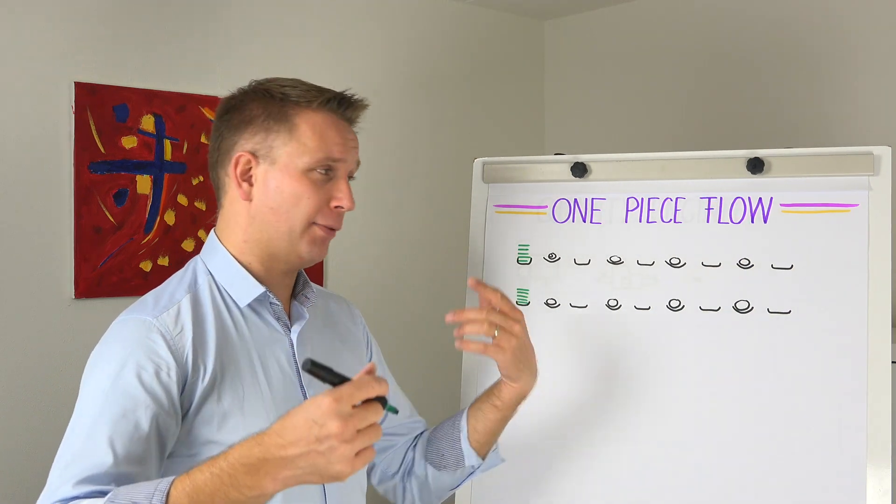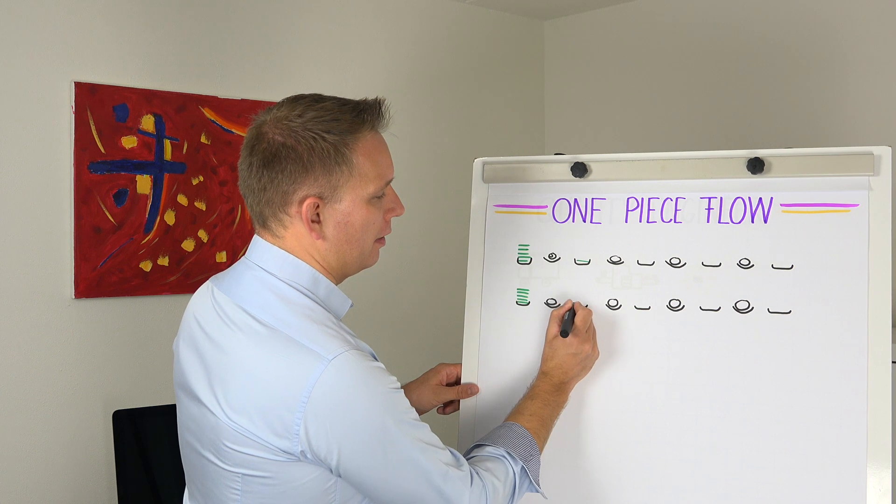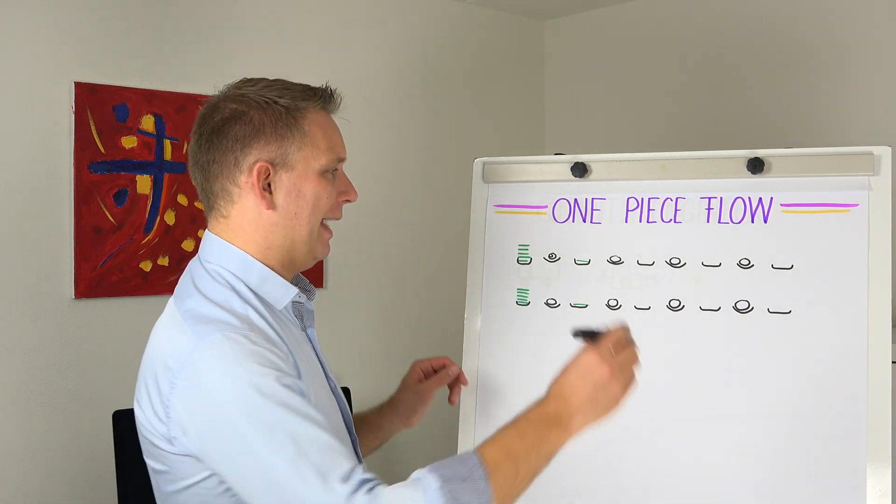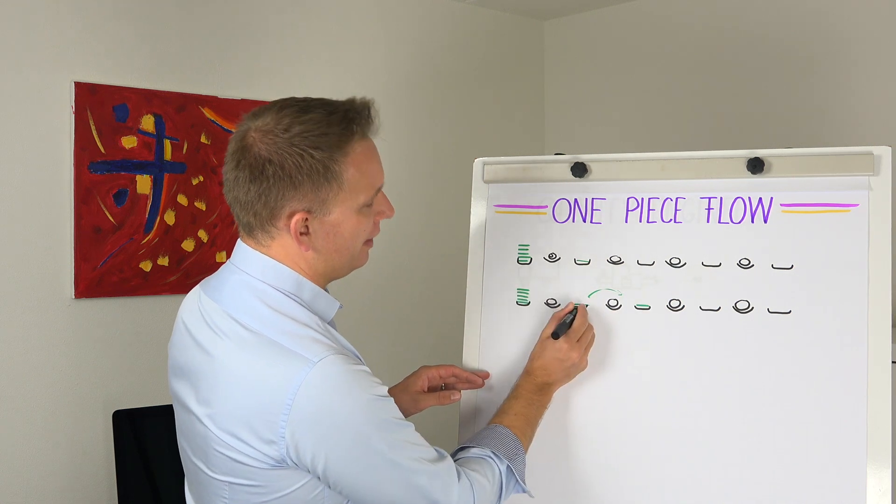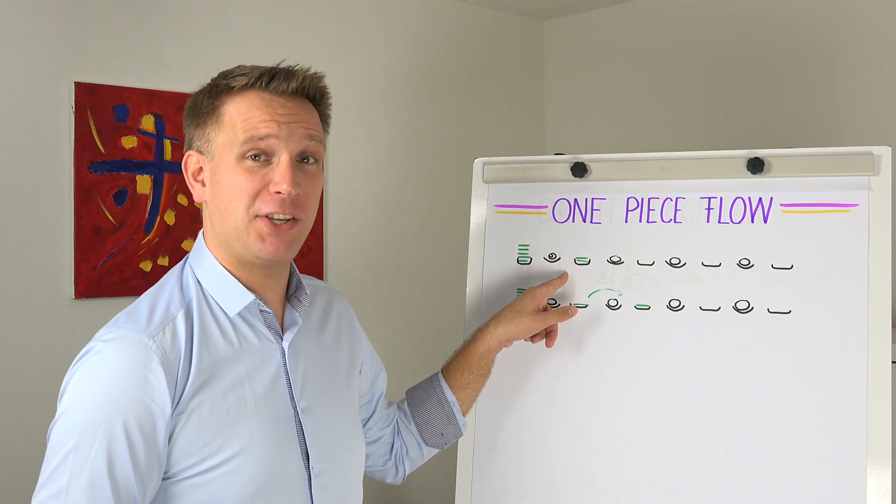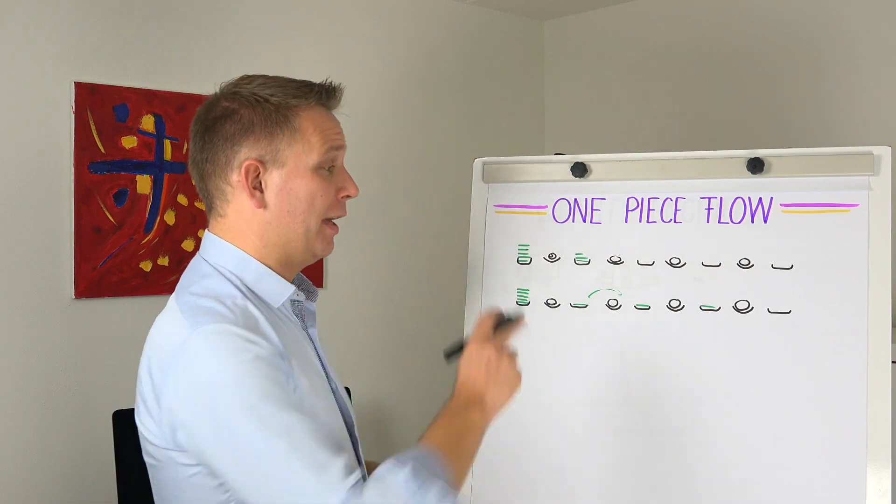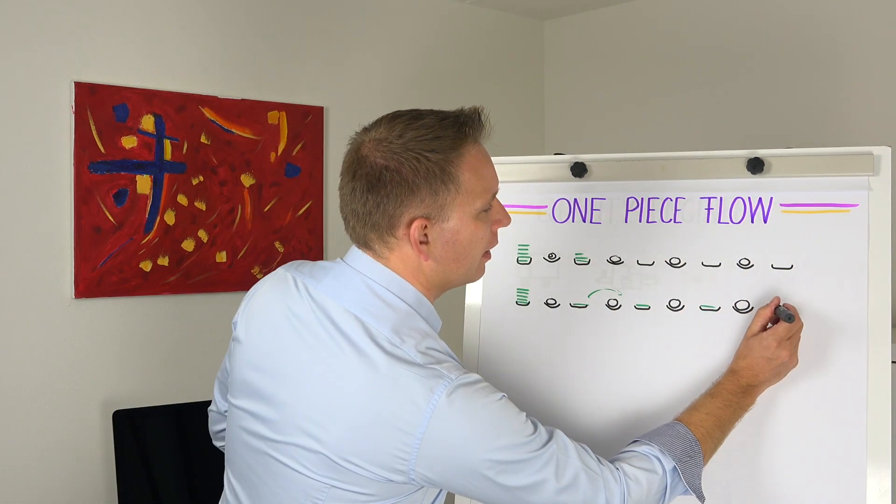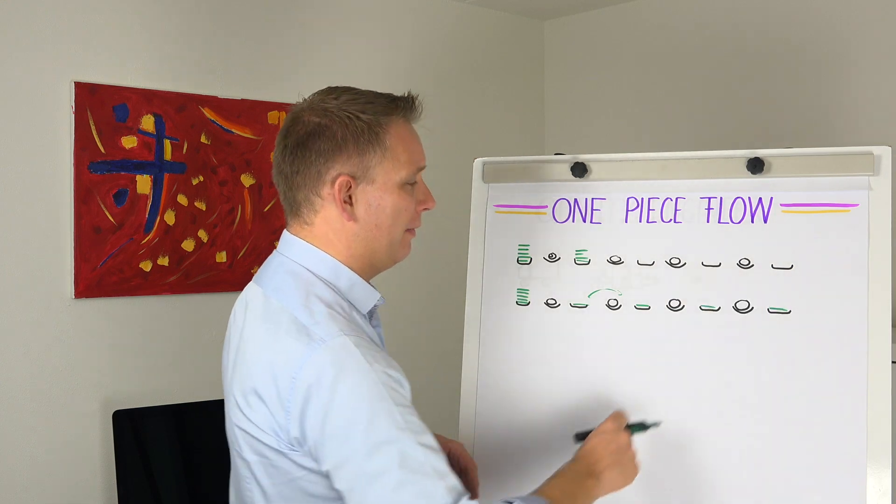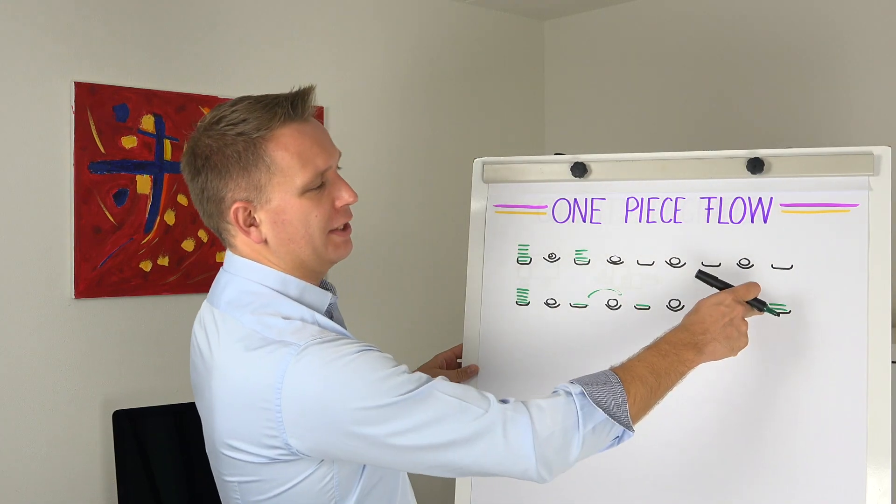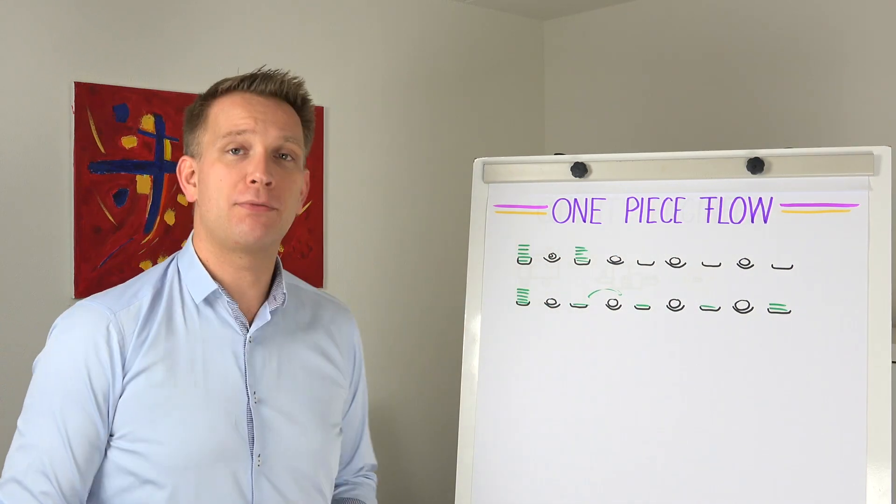So what they show is that you've got these tacts in your production and there is the one production system where you want to have batches of five and there's the one production system where we will flow it through the whole system but one piece at a time. So after one tact of the machines we'll have the same in both systems.